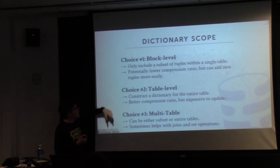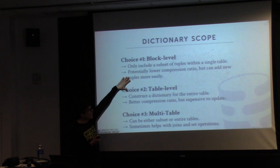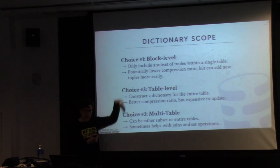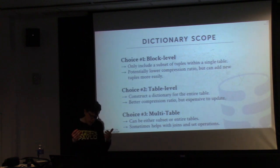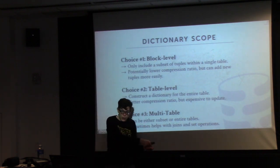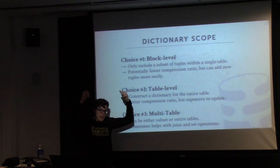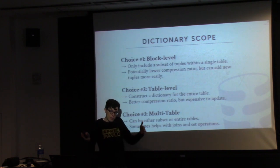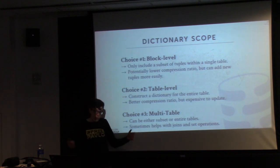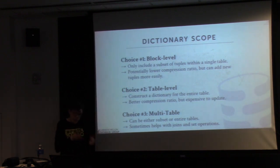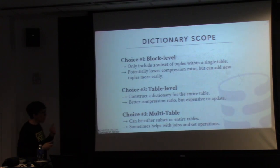Different systems do different things. HANA and MemSQL do something in between — not per block, but spanning multiple blocks. In HANA, new inserts go into a delta store in row format; when converting to column store format, a large chunk of the delta store is converted and compressed together, so the dictionary spans those multiple blocks. That's sort of the best of both worlds.